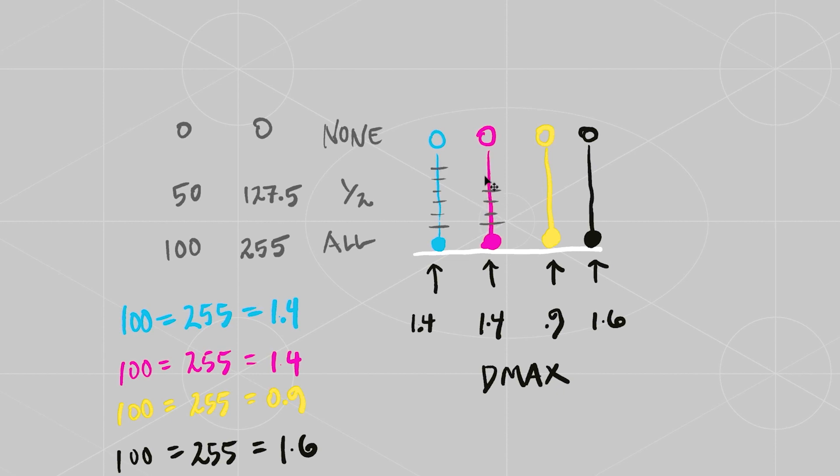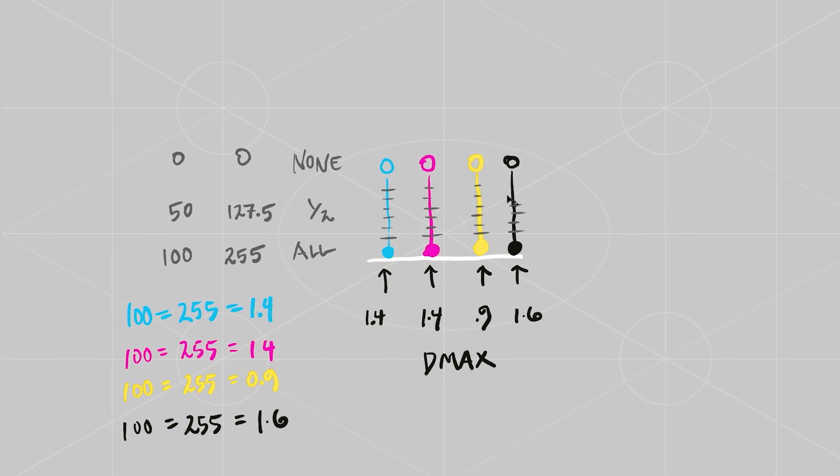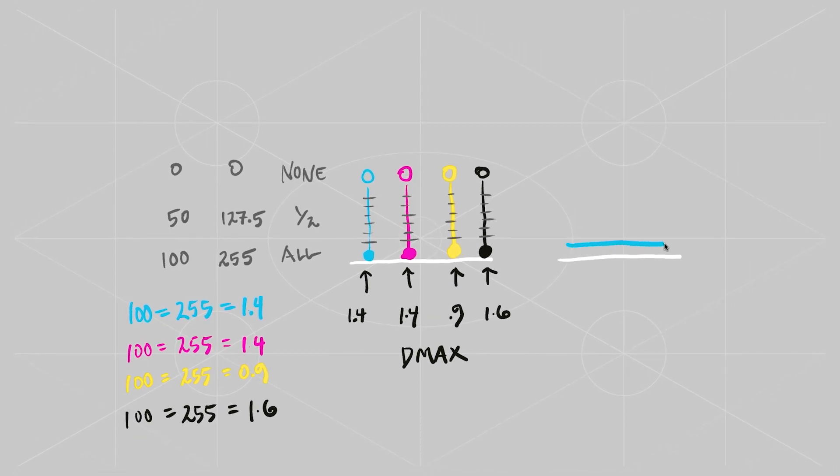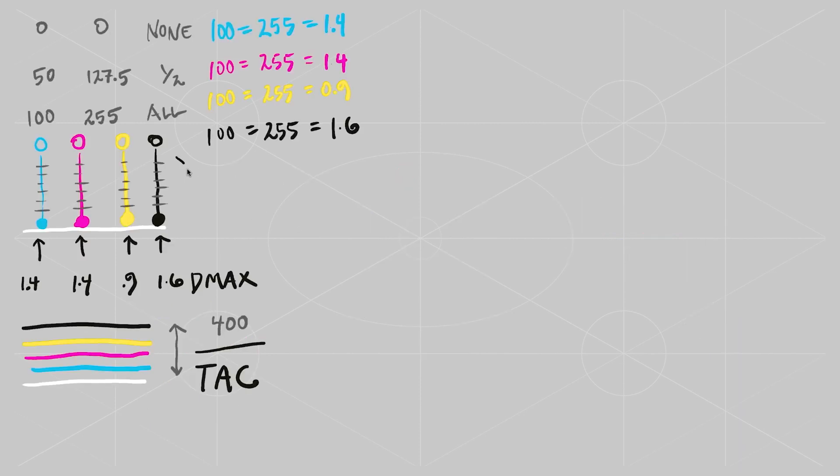Now through the half toning process, we subdivide that maximum amount into lighter and lighter values. When all four of those maximum amounts are stacked up, they equal 400%, which is too much to print, so we have to reduce it. That's called total area coverage, or TAC.